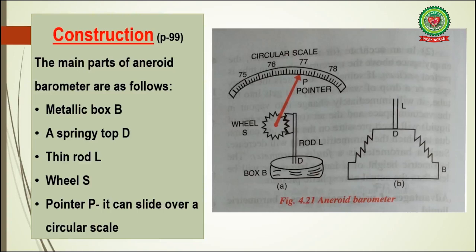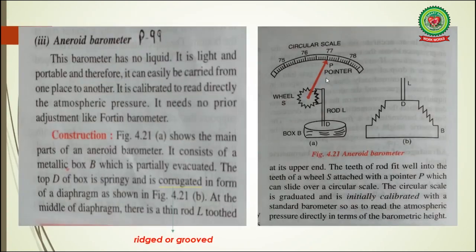Now let's see the construction of the aneroid barometer again on page number 99 of your book. The main parts of the aneroid barometer are as follows: number one, a metallic box — here you can see the metallic box; a springy top D — this upper portion is springy because it can move up and down; a thin rod L; wheel S; and a pointer P — this is the pointer — which can slide over a circular scale.